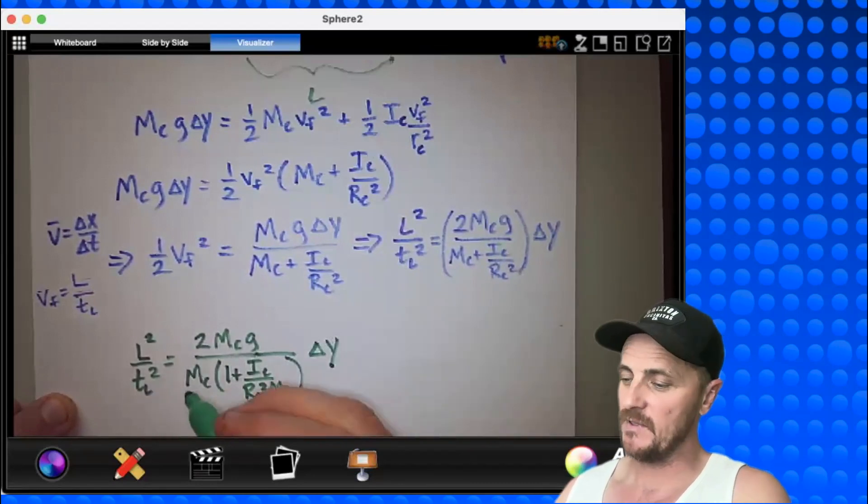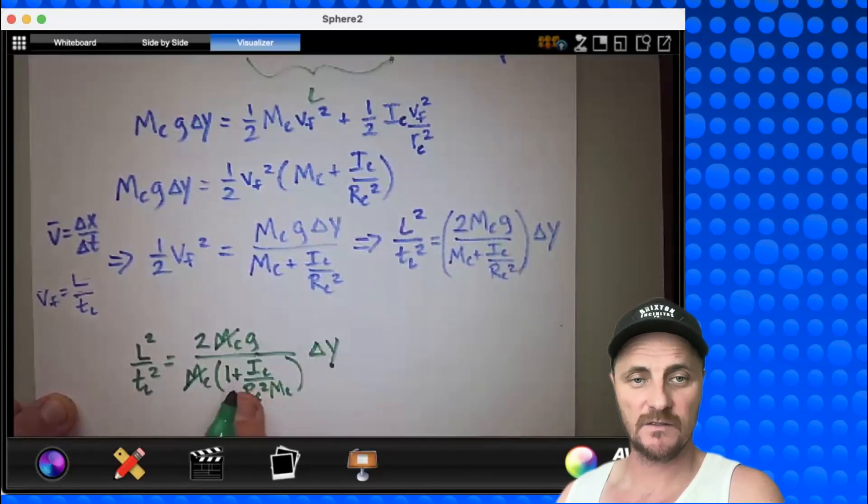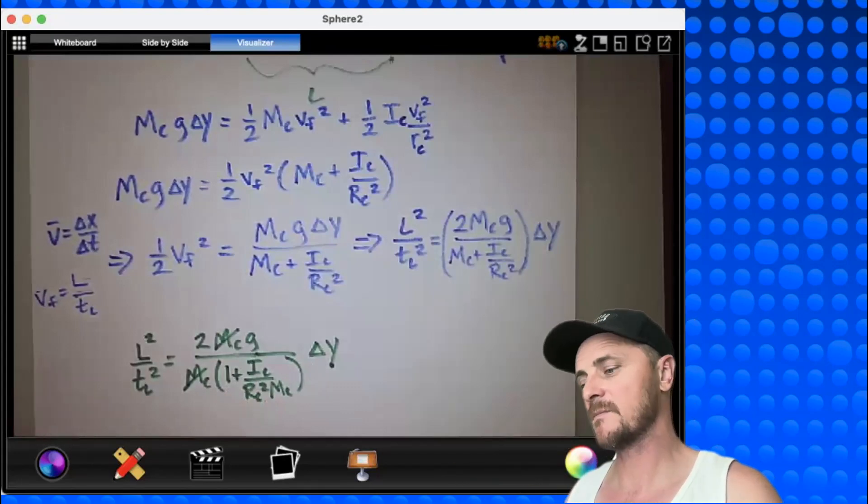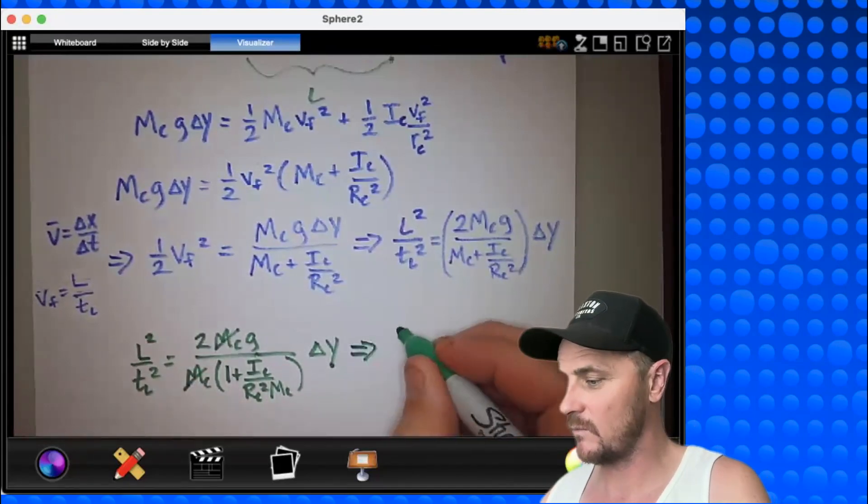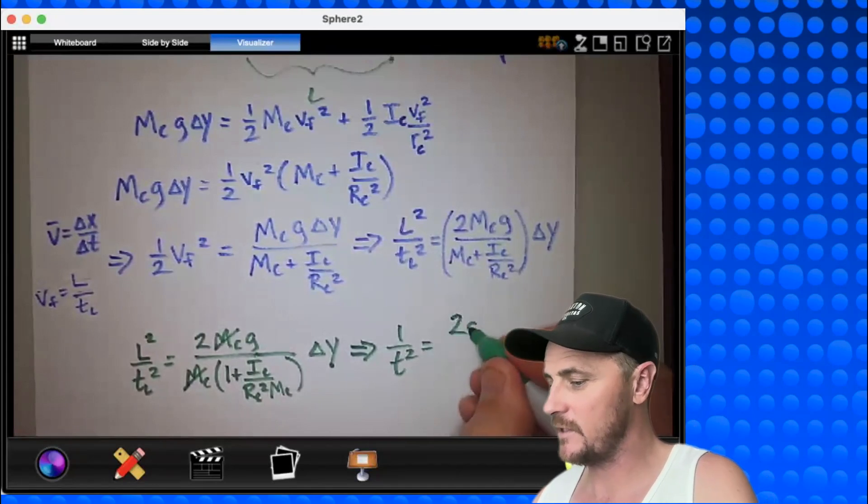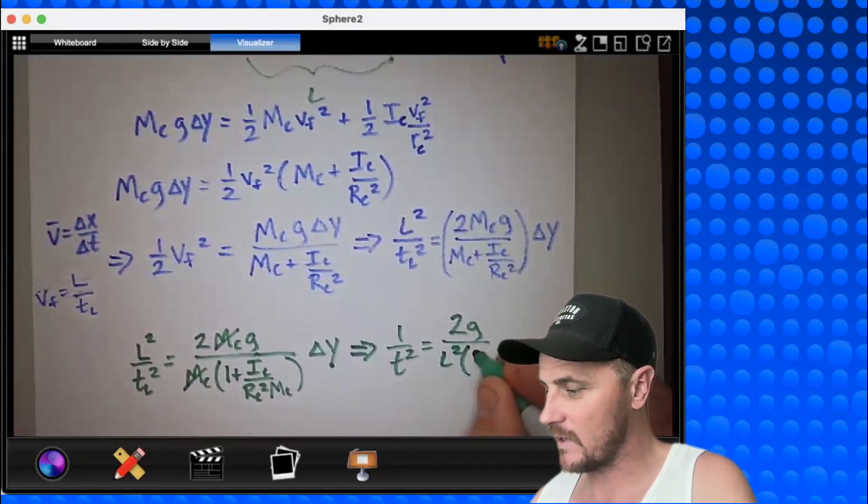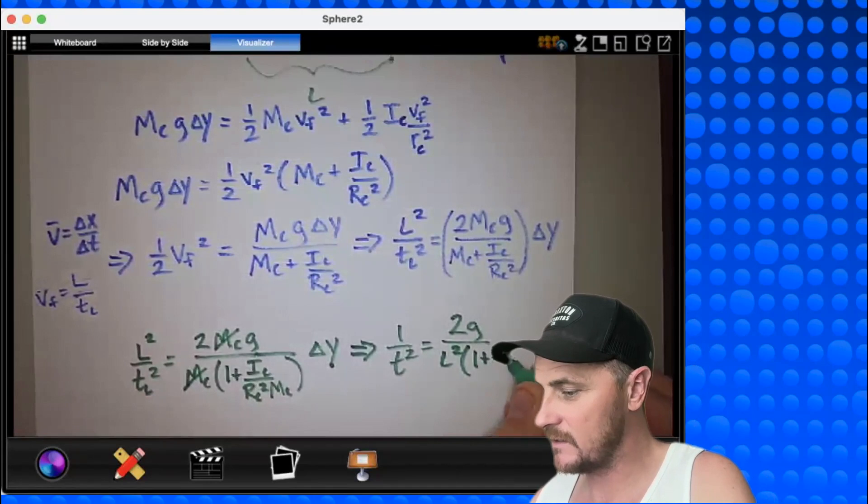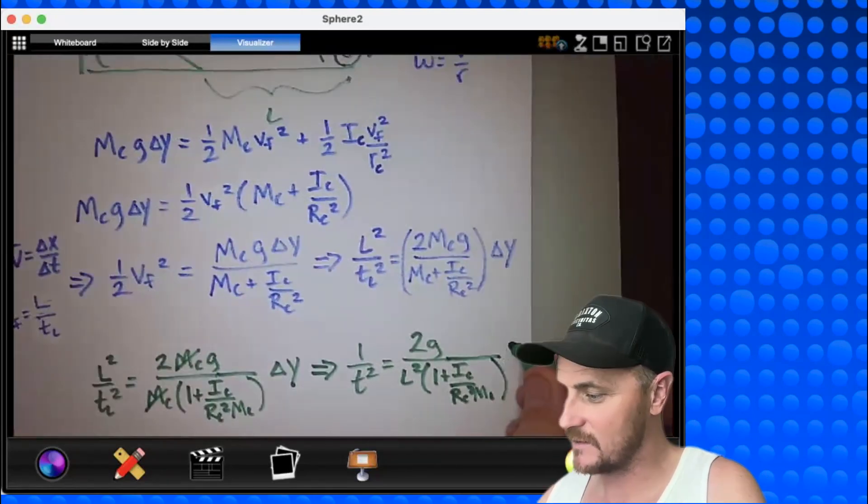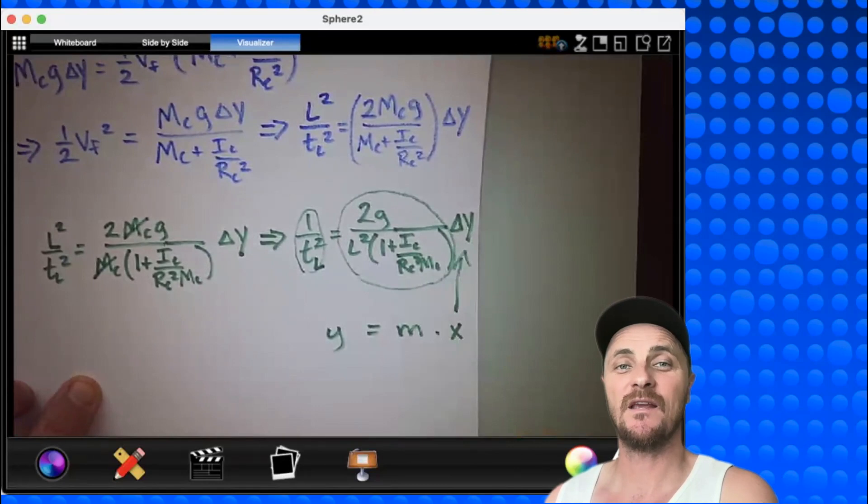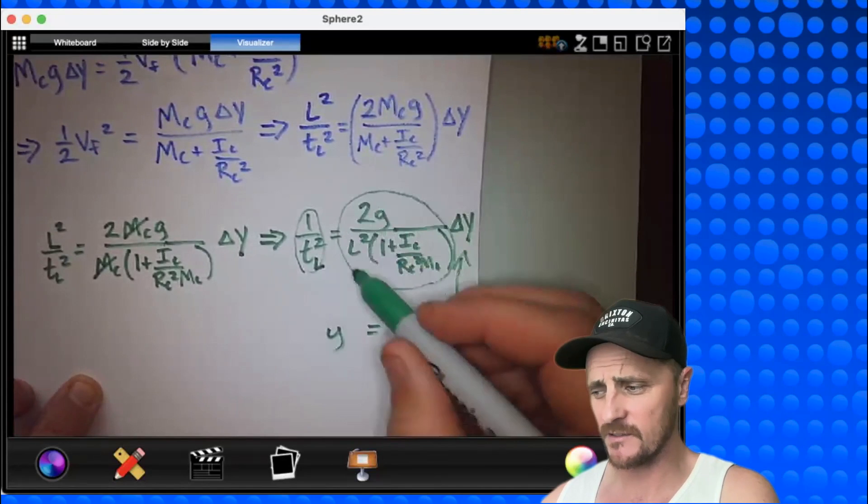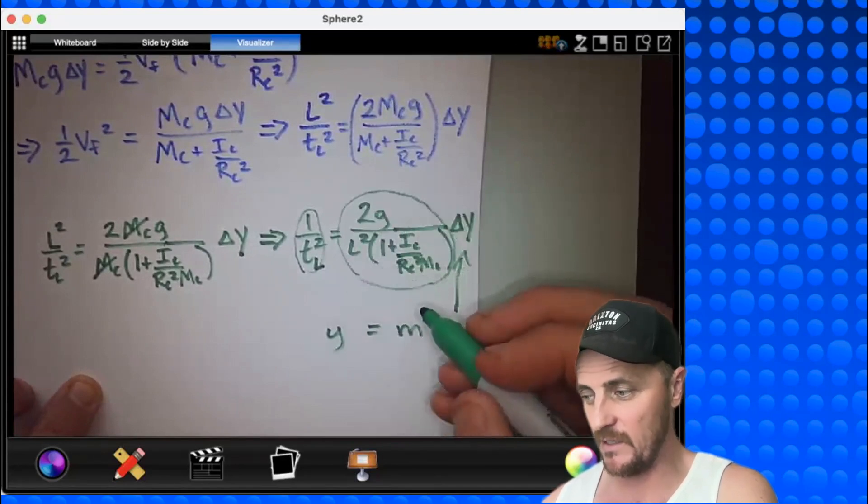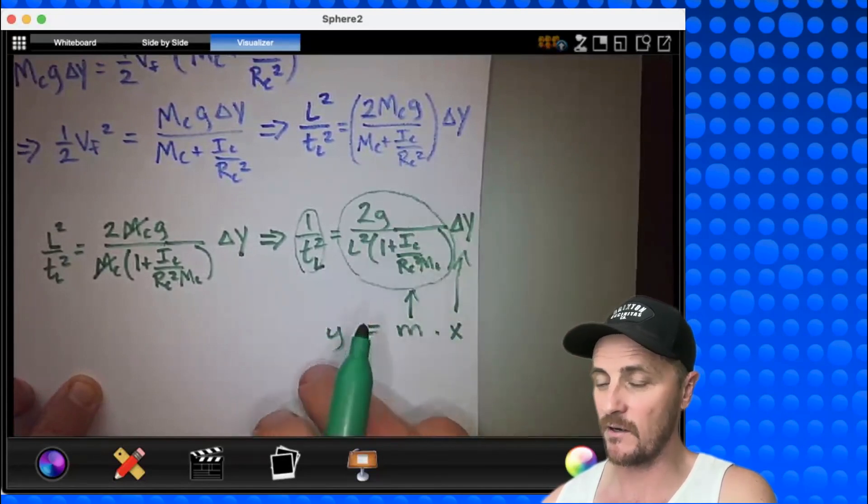And last but not least, since the l is never changing, I'm going to make it part of my slope and I will divide l squared over to here. We get one over t squared equals two g over l squared times the quantity one plus ic over rc squared mc times delta y. So what are we saying here? We're saying that on the x-axis we're going to plot delta y, as they told us to. In this big cluster of nonsense, that will be my slope. And finally, what are we going to plot on the vertical axis? We're going to plot one over tl squared, and that's what I need to provide in the last column of that table that they gave me.